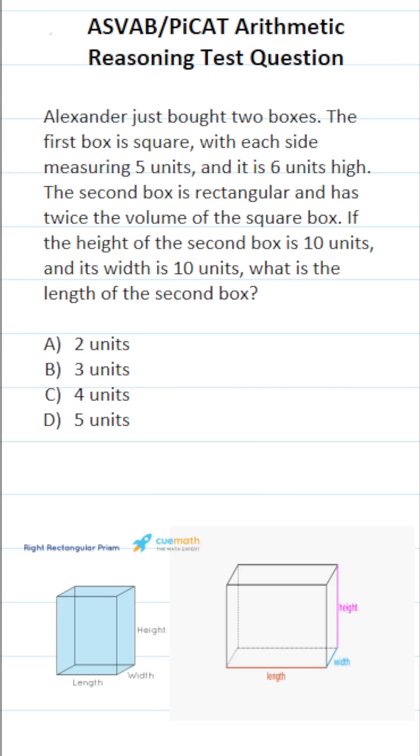In this case, it's pretty obvious that we're comparing the volume of two rectangular prisms. And again, you're not permitted to use a calculator or reference sheet on the ASVAB and PyCat.